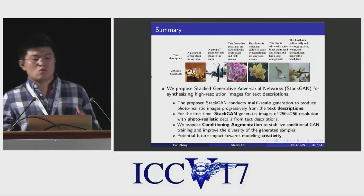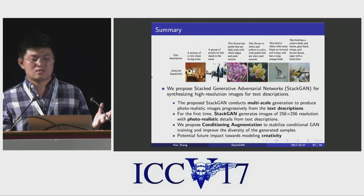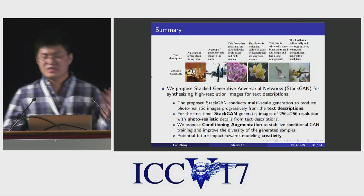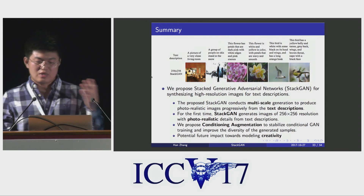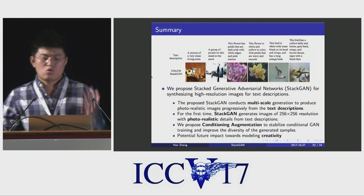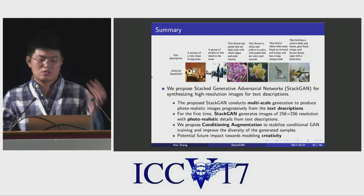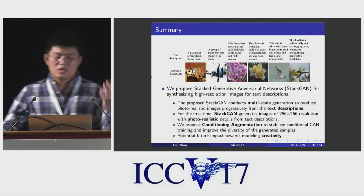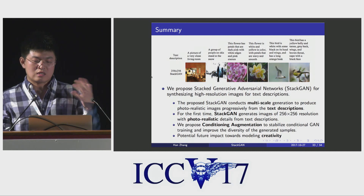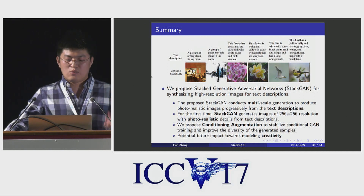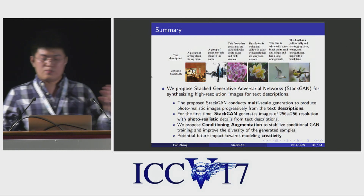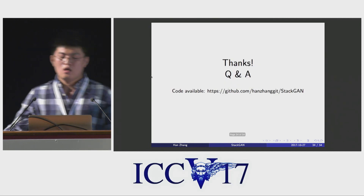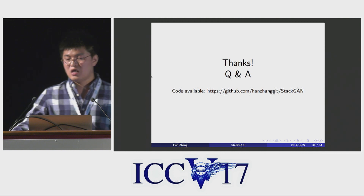To sum up, in this work we proposed Stack Generative Adversarial Networks for synthesizing high-resolution images from text descriptions. Compared to baseline models, our StackGAN for the first time generates 256x256 resolution images with photorealistic details from text descriptions. The proposed conditioning augmentation is able to stabilize conditional GAN training and improve the diversity of generated samples, and it can also be useful for potential impact towards modeling creativity. Our code is online. Thanks for the attention—I'm happy to take questions.